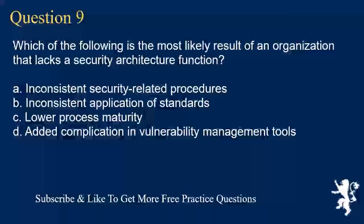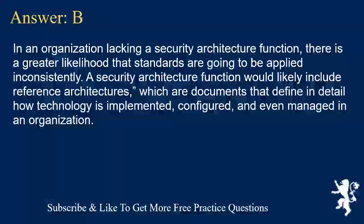Question 9. Which of the following is the most likely result of an organization that lacks a security architecture function? A. Inconsistent security-related procedures. B. Inconsistent application of standards. C. Lower process maturity. D. Added complication and vulnerability management tools. Answer B. In an organization lacking a security architecture function, there is a greater likelihood that standards are going to be applied inconsistently. A security architecture function would likely include reference architectures, which are documents that define in detail how technology is implemented, configured, and managed in an organization.